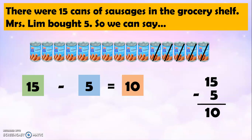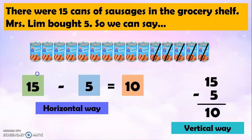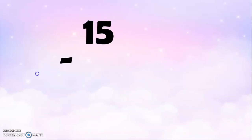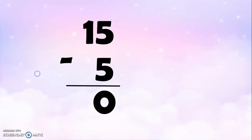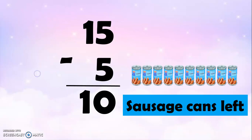And remember, my dear Grade 1, that we can also do subtraction in a horizontal way like this or a vertical way. So, again, 15 minus 5: 5 minus 5 is 0, and let's just bring down 1. That's why we have 10 sausage cans left in the grocery shelf.